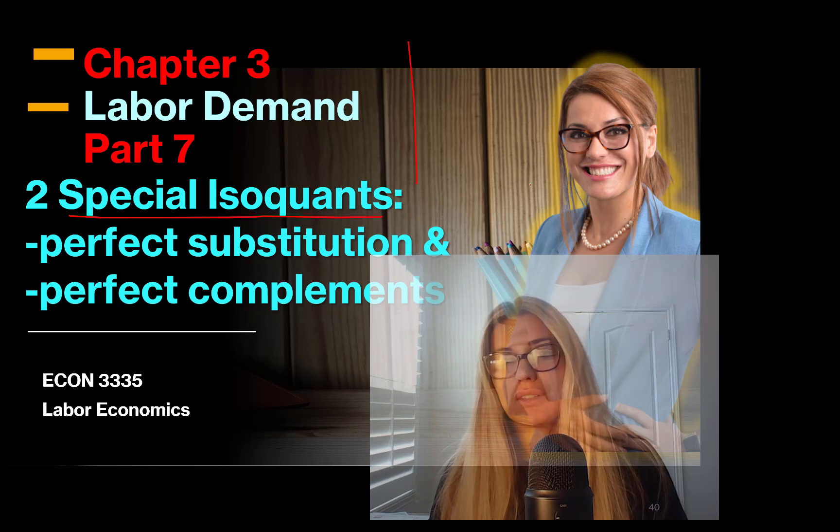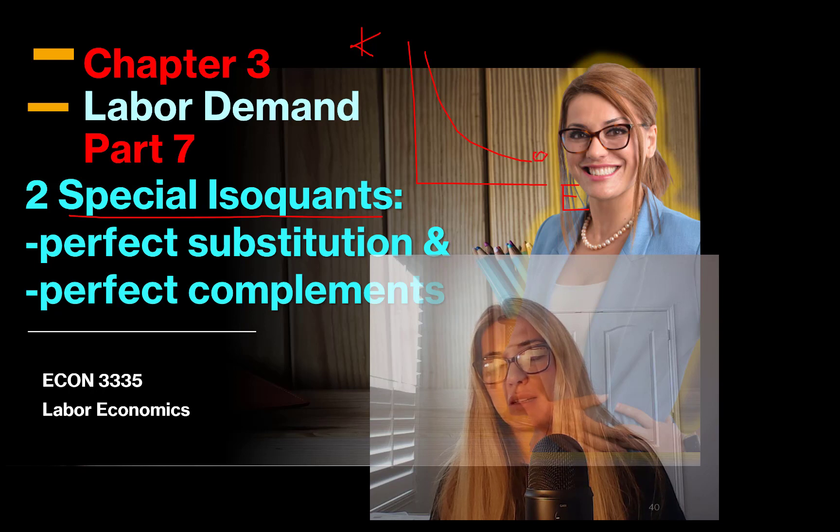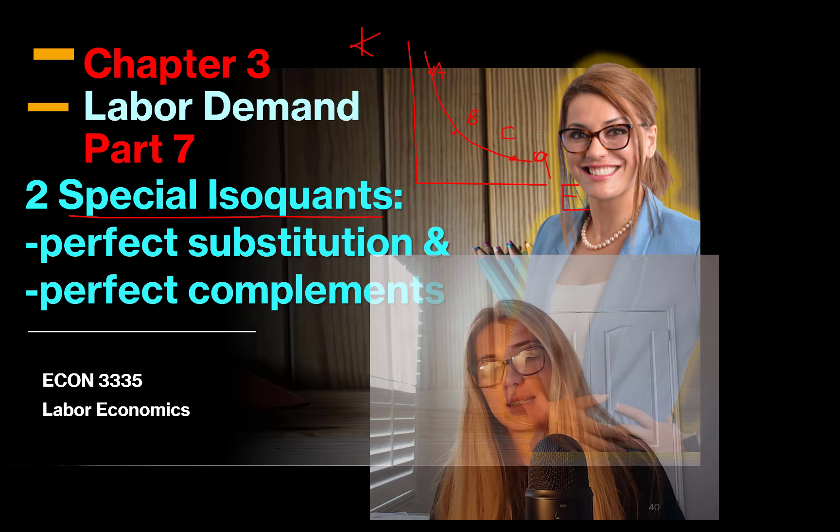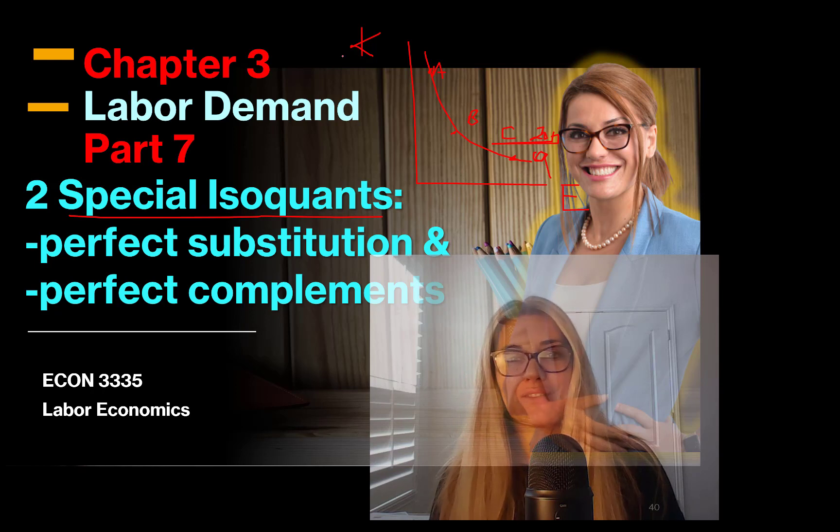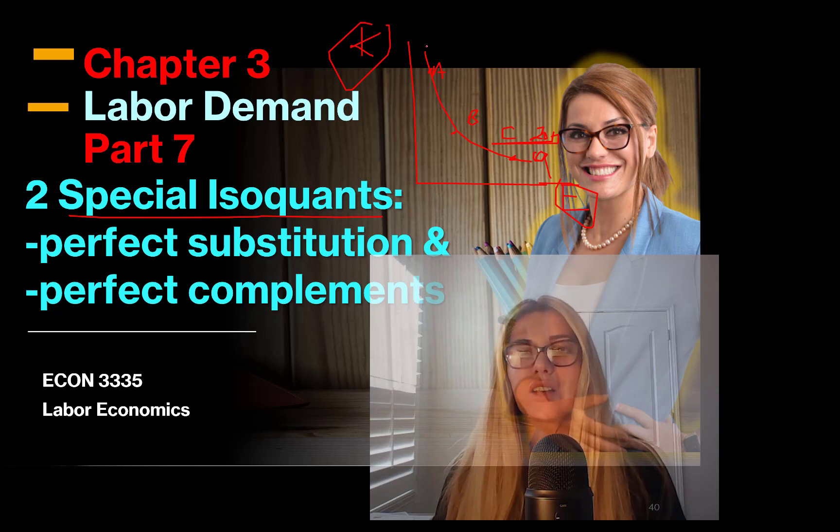I want to show you a couple of things. Isoquants show you capital and labor combination that produce the same level of output. So all these different combinations A, B, C, they all produce the same quantity, let's say I'm getting hungry, so 200 cookies, but with different combinations of labor and capital. So let's talk about two special isoquants that don't look like these convex to the origin isoquants.